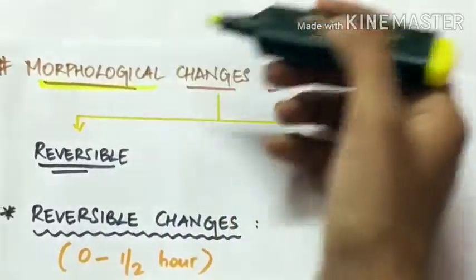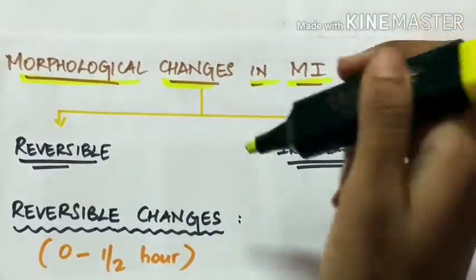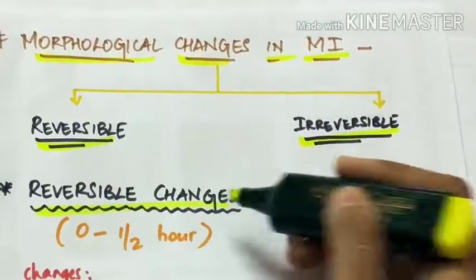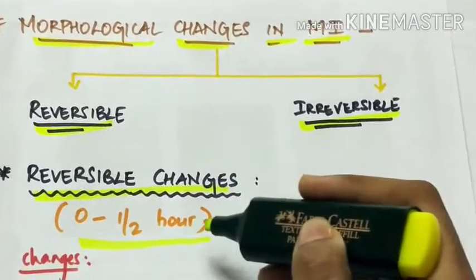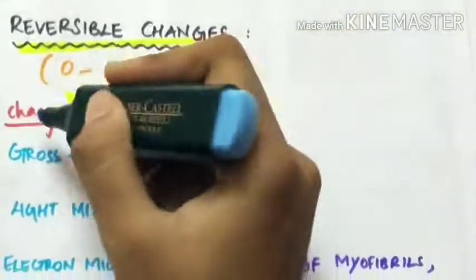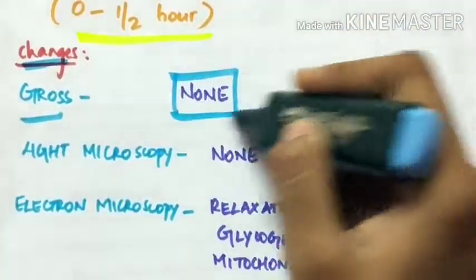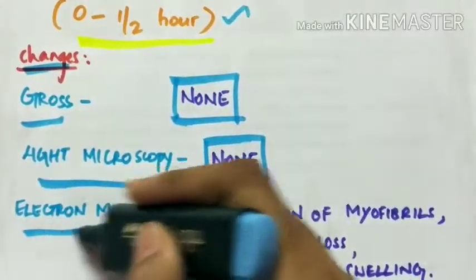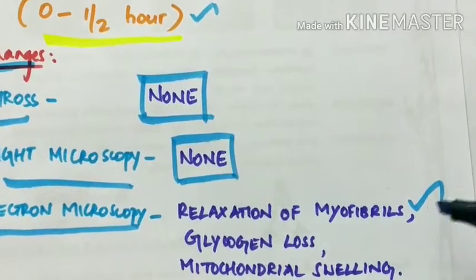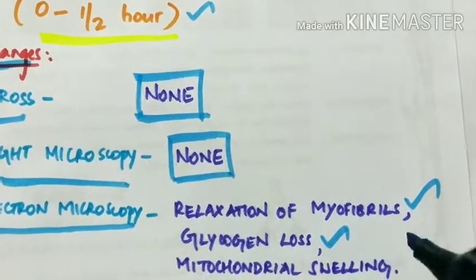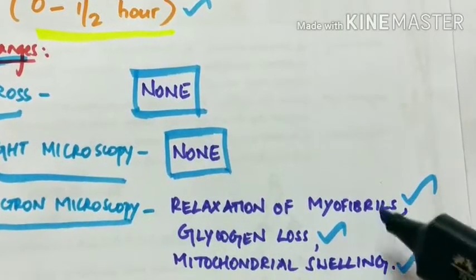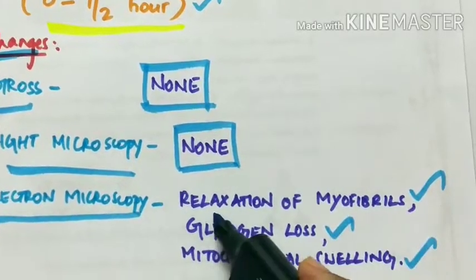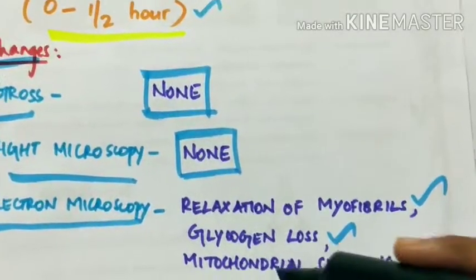Morphological changes in myocardial infarction are of two types: reversible and irreversible. Reversible changes occur from 0 to 30 minutes. Grossly and under light microscopy, there is no change observed. Under electron microscopy, there is relaxation of myofibrils, loss of glycogen, and mitochondrial swelling.